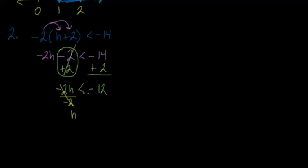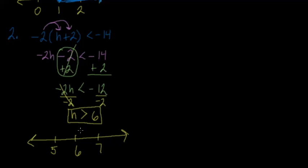I want to get rid of the coefficient of negative two, which means I divide both sides by negative two. Remember when we divide by a negative number, we need to switch the inequality. So now it is greater than, and negative 12 divided by negative two — a negative divided by a negative is positive — gives us positive six. So h is greater than six. The graph is an open circle at six, shaded to the right.